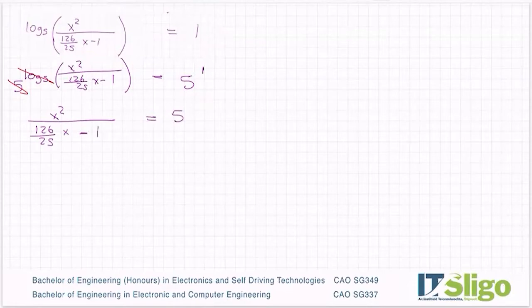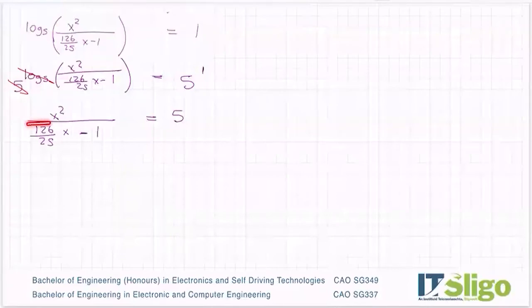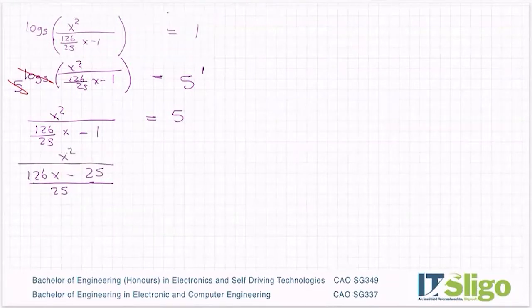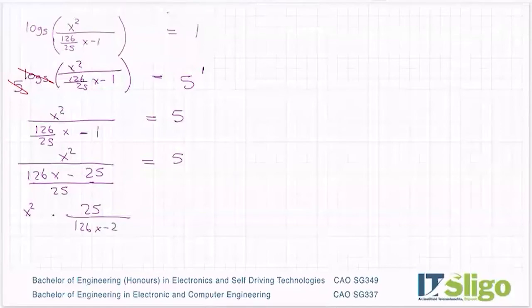And then it's algebra from here on in. So there's a fraction here, so I need a common denominator. So my common denominator is 25, so I have 126X minus 25. And of course it's got an X squared on the top equals 5. How do we divide fractions? So X squared divided by this fraction. Well you invert the bottom one and multiply. So you turn that bottom fraction upside down as such and you multiply.